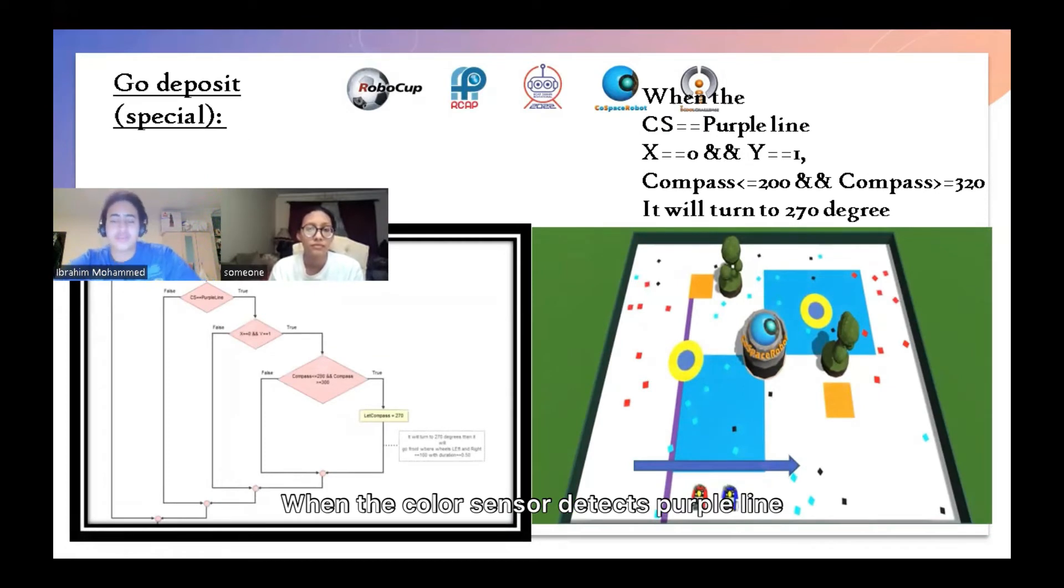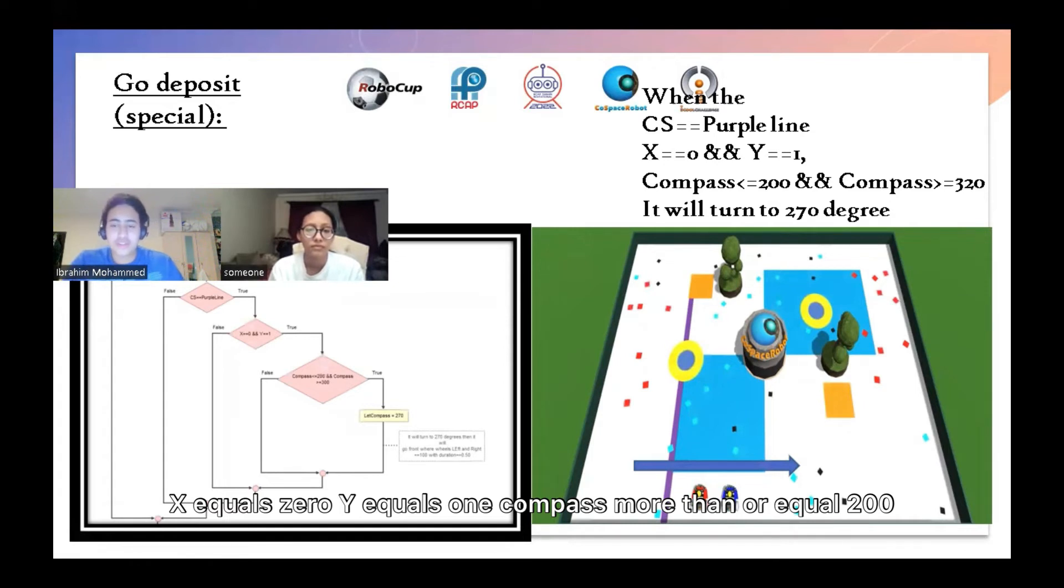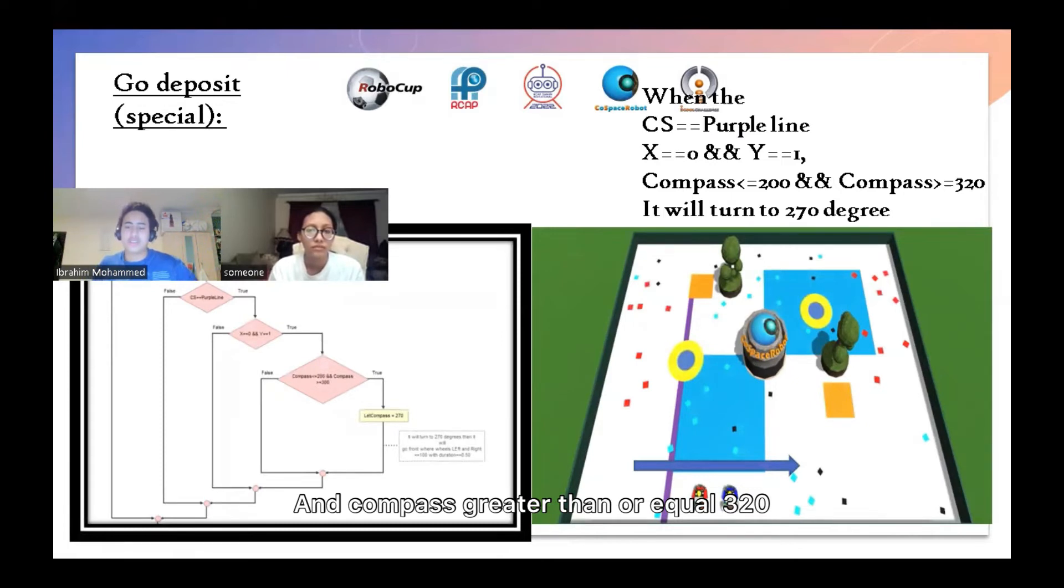Go to deposit: When the color sensor detects the purple line, x equals 0, y equals 1, compass smaller than or equal 200, and compass bigger than or equal 70, it will turn to 270 degrees.